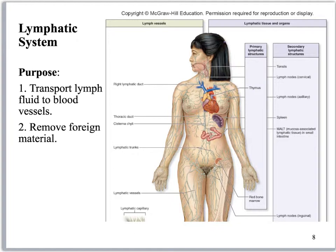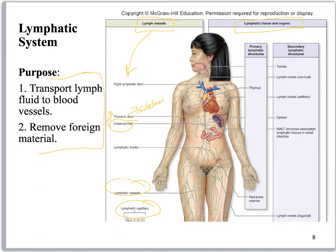Alright, let's look at the lymphatic system. You've got your purposes right here: transport lymph, remove foreign pathogens. We're going to divide this into lymphatic vessels versus lymphatic tissue and organs. For lymphatic vessels, I want you to know lymphatic capillaries, lymphatic vessels, and trunks — I'm not too worried about you remembering those. You've got your cisterna chyli, which goes into the thoracic duct, which goes into the left subclavian vein, and then the right lymphatic duct, which goes into the right subclavian vein. You should be able to identify those all on models.